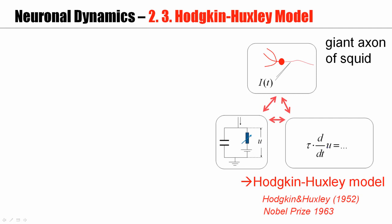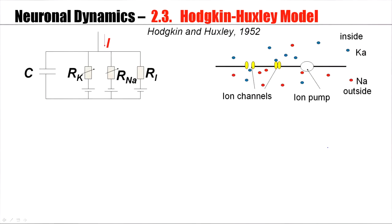The giant axon of the squid, just like any other cell, has ion channels embedded in the cell membrane as well as ion pumps. In the case of the giant axon of the squid, Hodgkin and Huxley found that there are two dominant channel types.